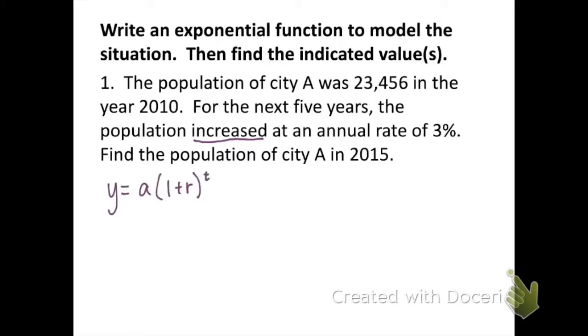So start by writing down y equals a times one plus r to the t. And now we need to figure out what a, r, and t values are from the problem. A is our initial amount, that's how many people we started with, so 23,456. R is the rate at which we're increasing, I see it says a rate of 3%. I'm going to take that 3% and move the decimal to the left two times, so instead of using 3 for rate, I'm going to use 0.03. And then time, it tells me that we started in 2010 with the initial amount and I want to know what the population is in 2015, so that's a five year difference.